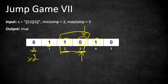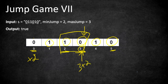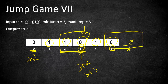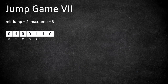Now at index 3, we look at index 4 which is a 1, so we cannot jump there. The next zero is at index 5. From 3, adding 2 gives position 5 and adding 3 gives position 6. The zero at index 5 lies within the range, and we have also reached the end of the array. So we return true.